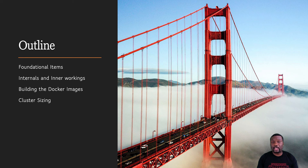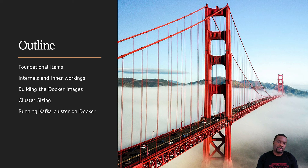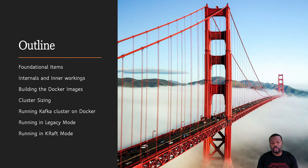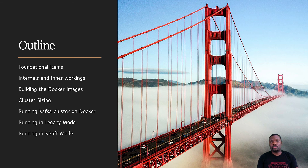The first mode is running it in legacy mode with Zookeeper, where we covered how you can run a three-node cluster with Zookeeper. Then in the other example, we covered how you can run it without Zookeeper — a single node instance without Zookeeper, as well as a multi-node instance without Zookeeper. In this tutorial, I'm going to show you how to run it in legacy mode using Docker Compose, and then also run it in KRaft mode, either as a single node or as a multi-node setup.